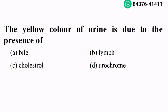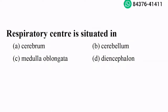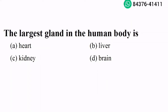Yellow color of urine is due to the presence of urochrome. Option D is the right answer. There are approximately 700 muscles in the human body. Option D is the right answer. The respiratory center is situated in the medulla oblongata. Option C is the right answer. The largest gland in the human body is the liver.